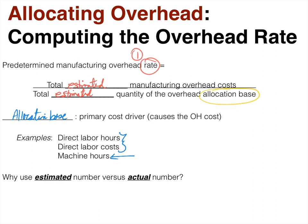Why do we use estimated numbers in this equation as opposed to actual numbers? If we used actual numbers to calculate the rate, we would end up with no under or over allocated overhead. The reason we use estimates is because we don't know actual numbers until the year is completed. We use estimates to come up with allocations for overhead on specific jobs we might need to bid on — if we don't know numbers until year end, it's difficult to make a competitive bid.